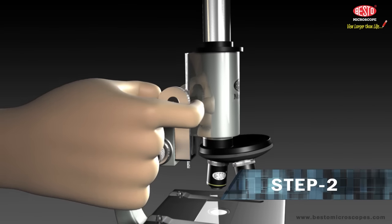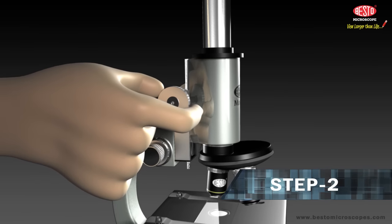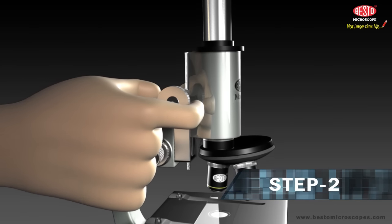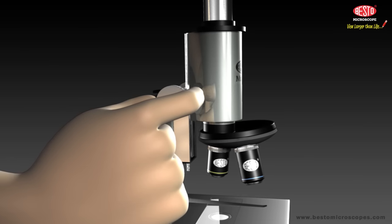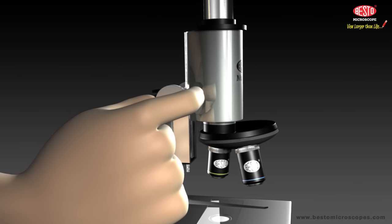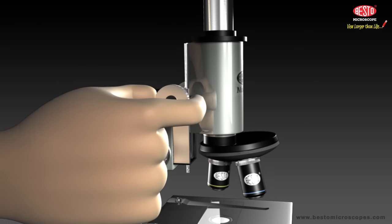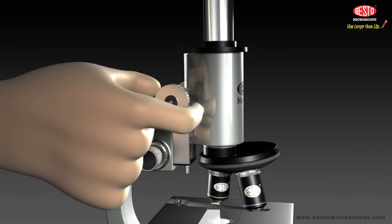Use the coarse adjustment knob to raise the objective so that its lowest end is about 1 inch or 2.5 centimeters above the stage. In all Besto microscopes, aperture control is by iris diaphragm. At this stage, open it fully.